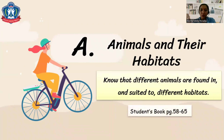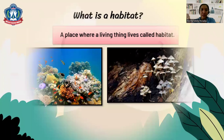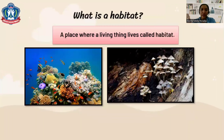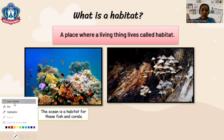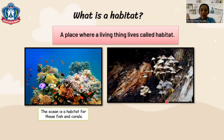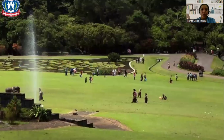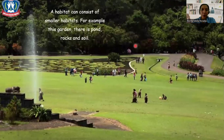You can open the student's book page 58 to 65. What is a habitat? It's a place where a living thing lives. We have two different habitats here. The first one is the ocean — this is the habitat for fish and coral. The second picture is the rotting log, which is the habitat for mushrooms.